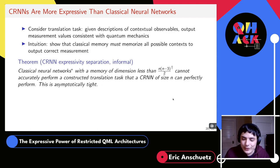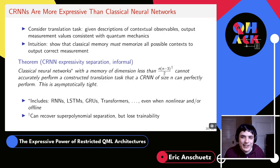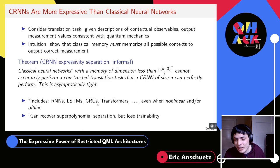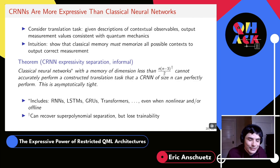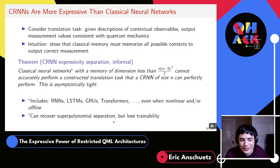This leads to our theorem: there's a quadratic overhead in doing this task classically versus quantumly, and we show this is asymptotically tight. Two asterisks: first, even though our quantum model is a quantization of a linear classical RNN — a very simple model — this separation holds over transformers and things like ChatGPT, because it reduces to a memory requirement. Second, with a slight modification of the task, we can get a super-polynomial separation, but we lose trainability guarantees, so we focus on the quadratic case.